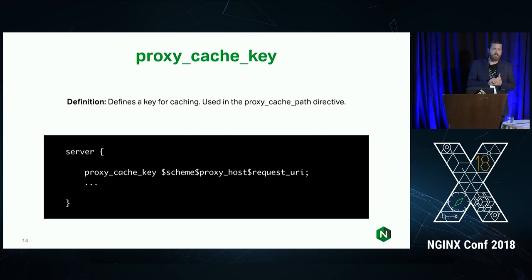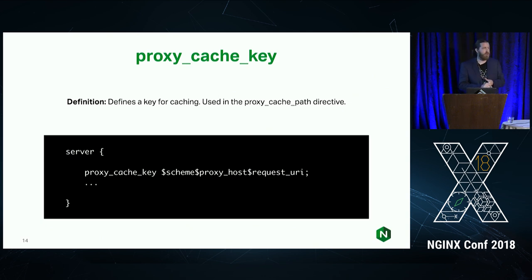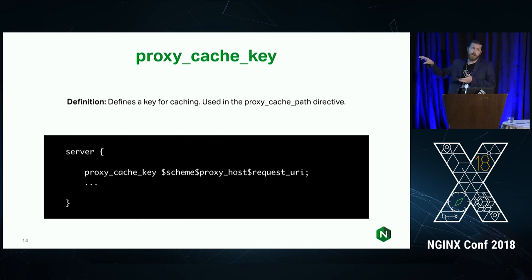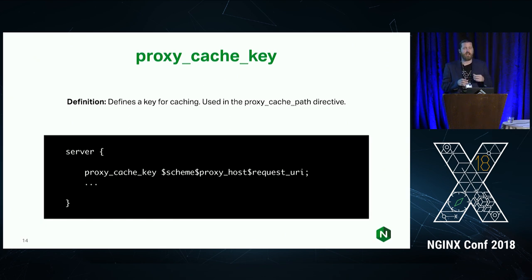The next thing you need to do is set up a cache key. The default is going to be the scheme — HTTP or HTTPS — plus the hostname of the upstream origin server, and then the full request URI including all path and arguments. But the nice thing is it's fully customizable. You can base it off a cookie, a header, a unique argument, or strip out the full URI and use only the localized URI. It gives you the flexibility to cache only what you want and control what is considered a unique cached item.